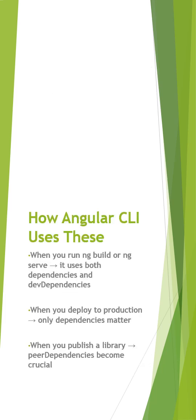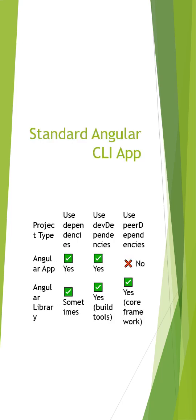How Angular uses these: when you run ng build or ng serve, it uses both dependencies and dev dependencies. When you deploy to production, only dependencies matter. When you publish a library, peer dependencies become crucial. These are the cases when each type is important.